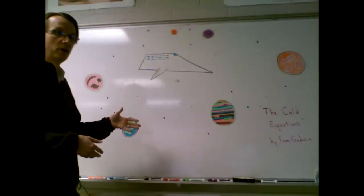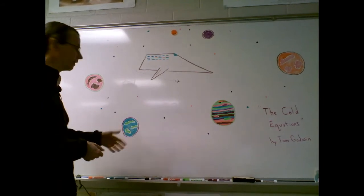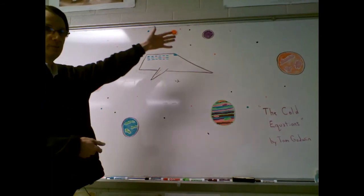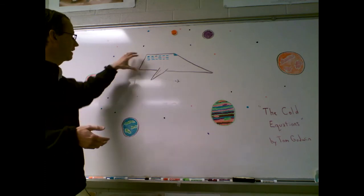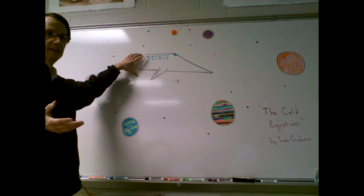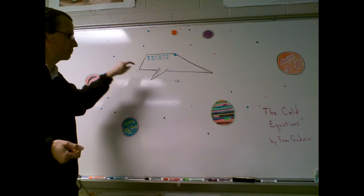So there'd be a couple people on this planet here, a couple people on this planet, a couple people on that planet, and so on. The way they get these people supplies is they have this huge ship, and in the case of our story this ship is going to be called the Stardust.